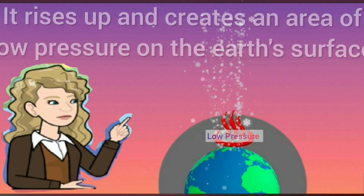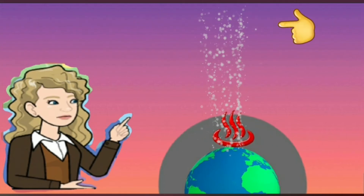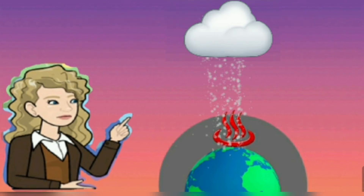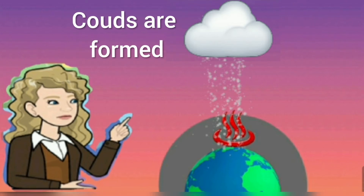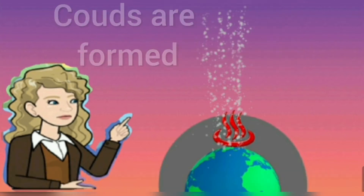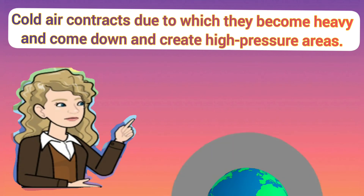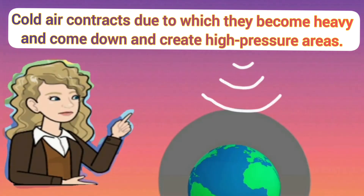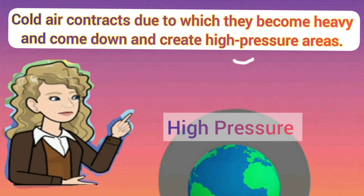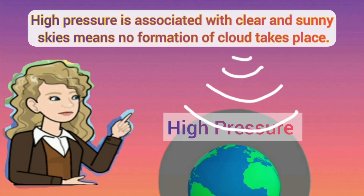At higher altitudes, condensation takes place because of low temperature, and clouds are formed. Thus, low pressure is associated with cloudy skies and wet weather. Quite opposite to this, cold air contracts, becomes heavy, and comes down, creating high pressure areas.